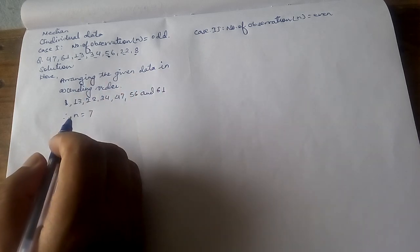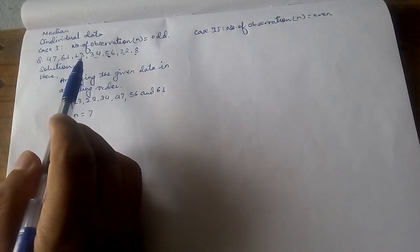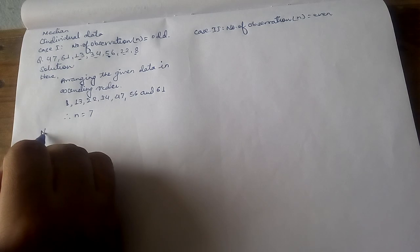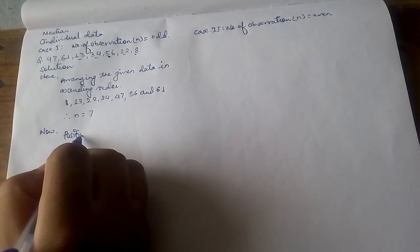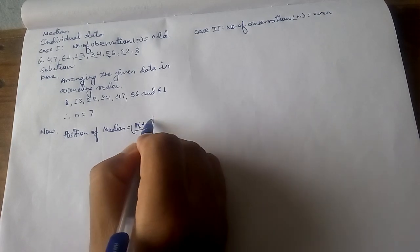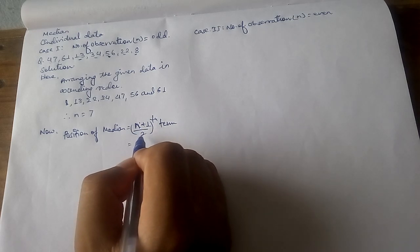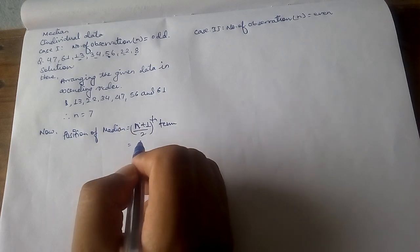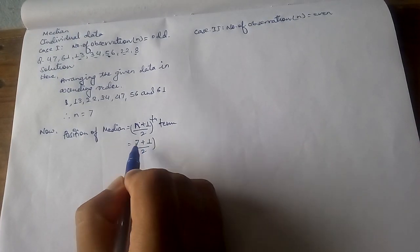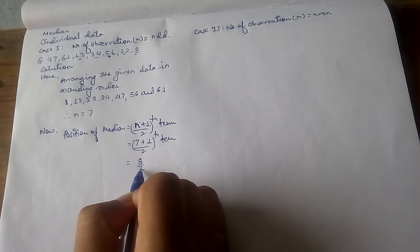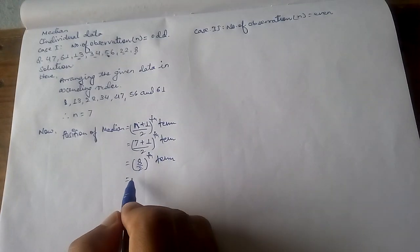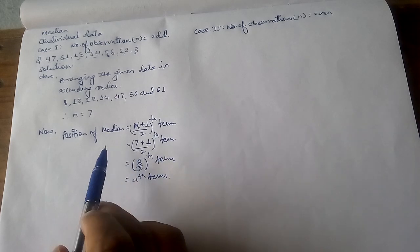As mentioned before, median is a partition value and we need to arrange the data in standard order. To find the median, we first need to find the position. The position of median is given by (n + 1) / 2. It is divided by 2 because the median divides the data into two equal parts. The value of n is 7, so we get (7 + 1) / 2 = 8 / 2 = 4.